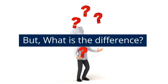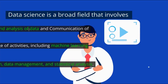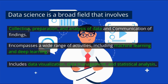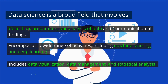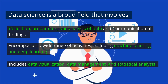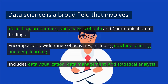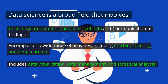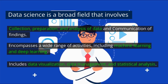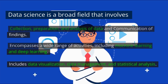But what's the difference between all three of these terms? Data science is a broad field that encompasses both machine learning and deep learning. It also includes other techniques for analyzing and interpreting data, such as visualization. Data scientists may use machine learning and deep learning algorithms as part of their work, but they also use a variety of other tools and techniques to extract more insights from the data.